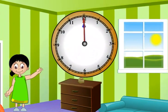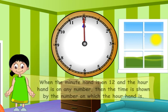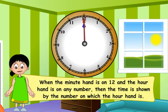Here is a clock. Can you read the time from this clock? When the minute hand is on 12 and the hour hand is on any number, then the time is shown by the number on which the hour hand is.